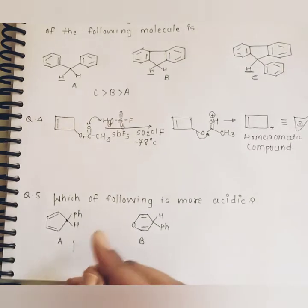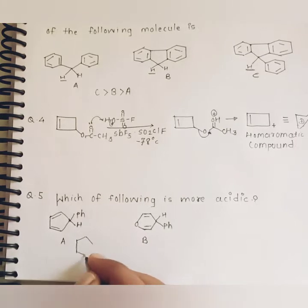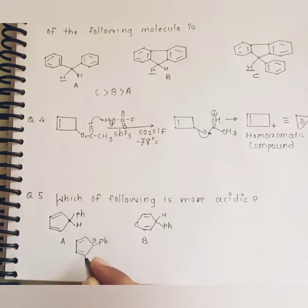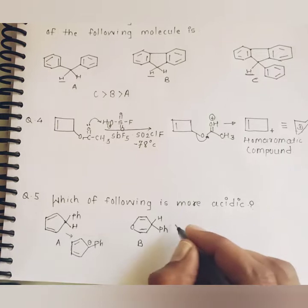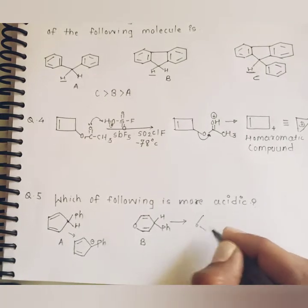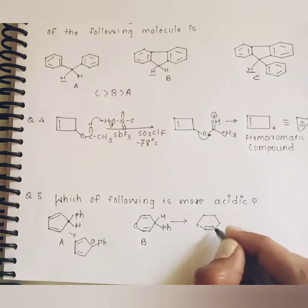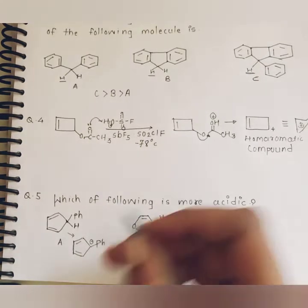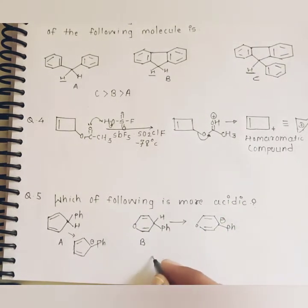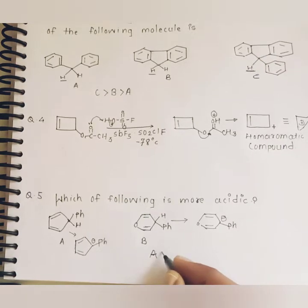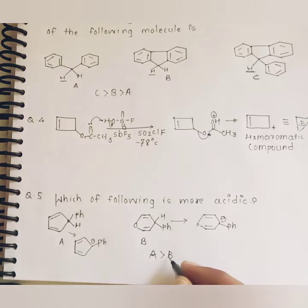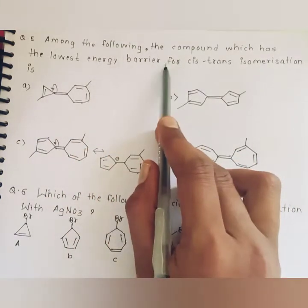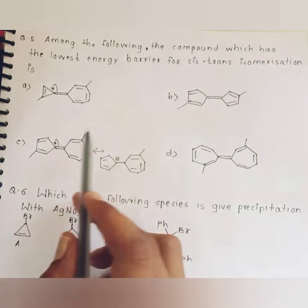Question five: which of the following is more acidic? If we deprotonate compound A, it results in the formation of an aromatic compound. If we deprotonate compound B, it results in the formation of an anti-aromatic compound. Therefore, A is more acidic than B.